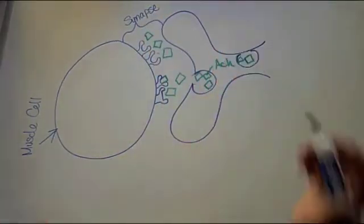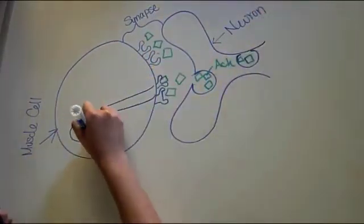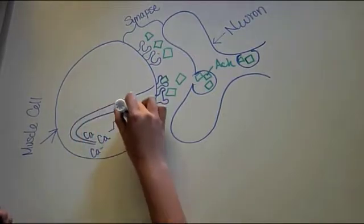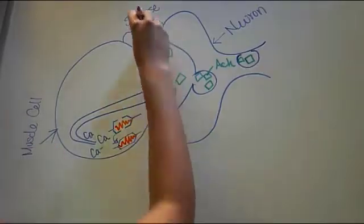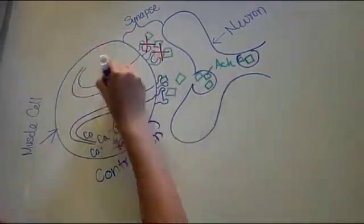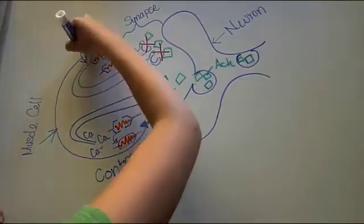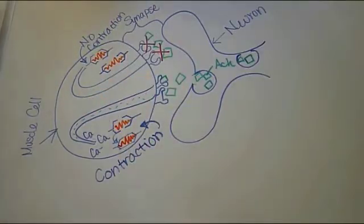When a neurotransmitter called acetylcholine is released from the nerve, it attaches to a receptor which then in turn causes a chain of events which ultimately leads to the release of calcium. This calcium binds to actin, which then binds to myosin. Actin and myosin are the basic building blocks of muscle.